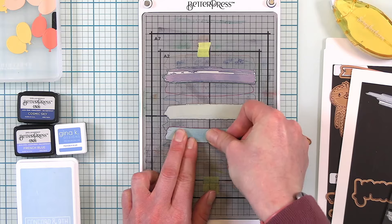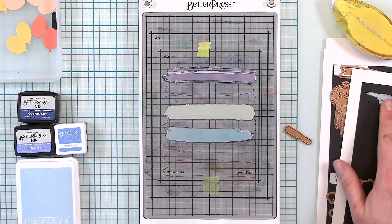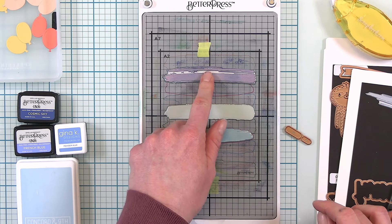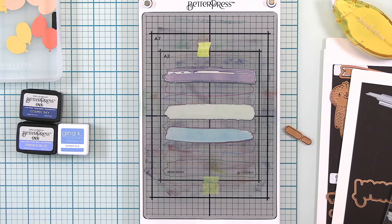So now I have three of the Better Press plates lined up with my template and now I'm grabbing my ink. You can see here that I'm using a few different inks and that's because I wanted all of my paint swatches to be blue.